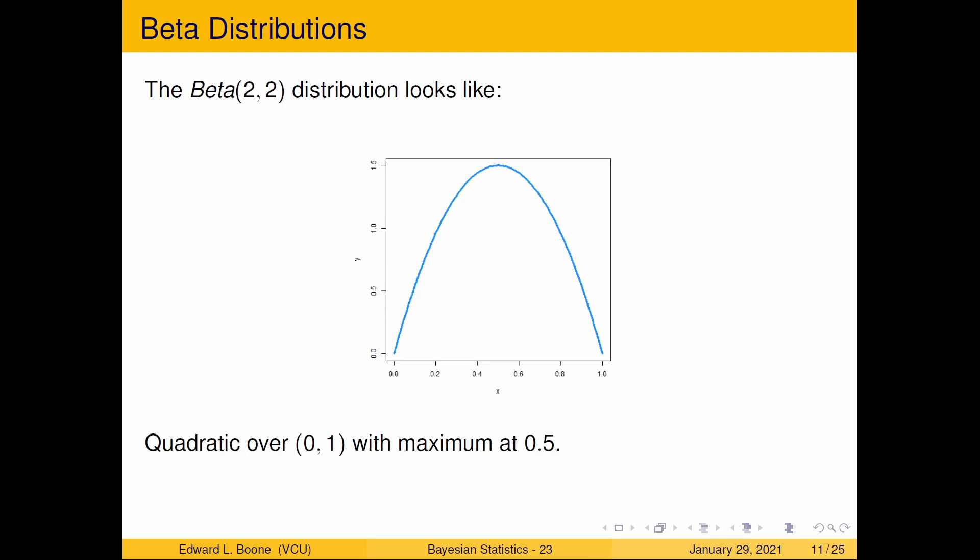I can put in a beta(2,2) and now this becomes quadratic with the maximum at 0.5. That gives me an interesting way of pushing most of the probability towards the middle.